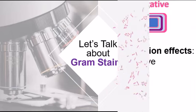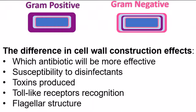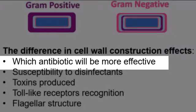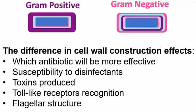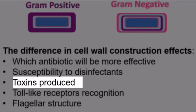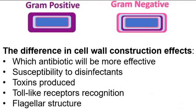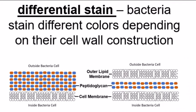It turns out that most bacteria construct their cell walls in one of two ways, and the type of construction causes a difference in which antibiotics will work best, what their susceptibility to disinfectants will be, what type of toxins they make, which results in different kinds of symptoms, etc. Gram staining is a big deal because it lets you see which of the two types of constructions the bacteria use in their cell walls.